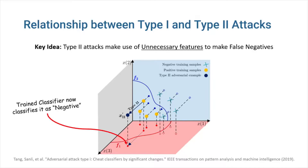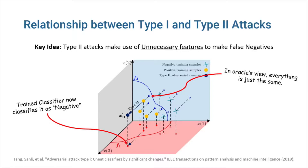As you can see here, moving a data point in the direction of x3 can change the trained classifier's output. Meanwhile, the oracle will not observe any variation in point coordinates, since its location on the x1 and x2 axes is unchanged. So, despite the fact that the real class of the data point should not change, our classifier classifies it as negative, resulting in a false negative. This is an adversarial attack of type 2.